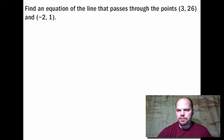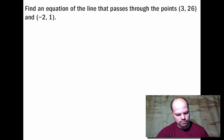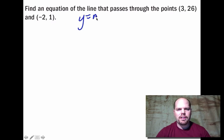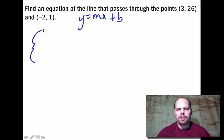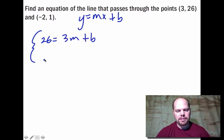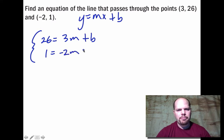Find an equation of the line passing through (3, 26) and (-2, 1). We'll solve this using a system of equations. A line has the form y = mx + b. Plugging in the first point: 26 = 3m + b. Plugging in the second point: 1 = -2m + b. This gives us a system of two equations.